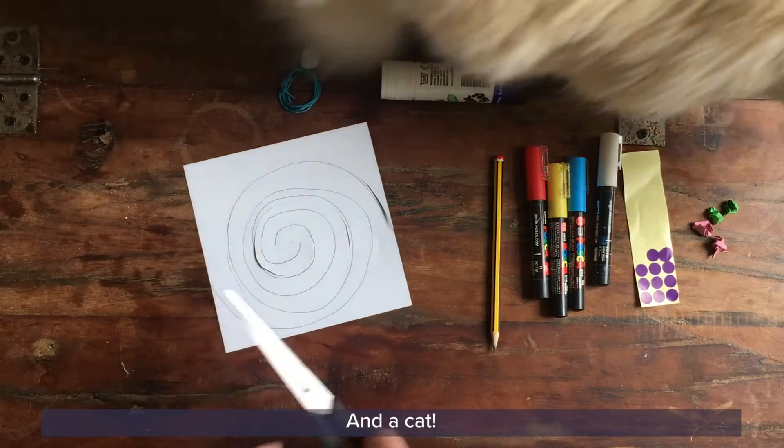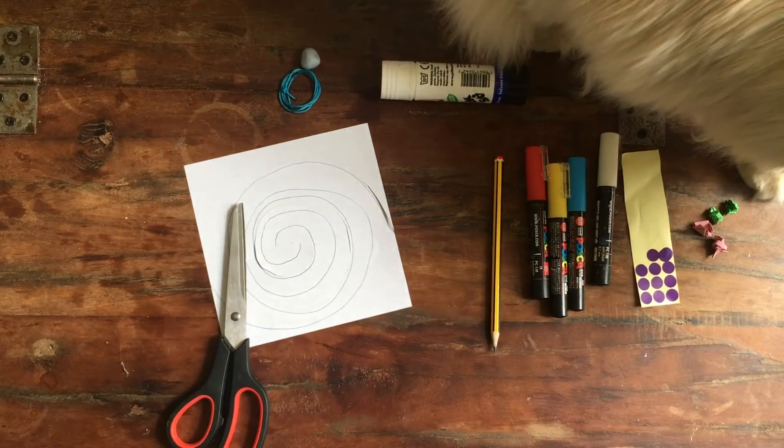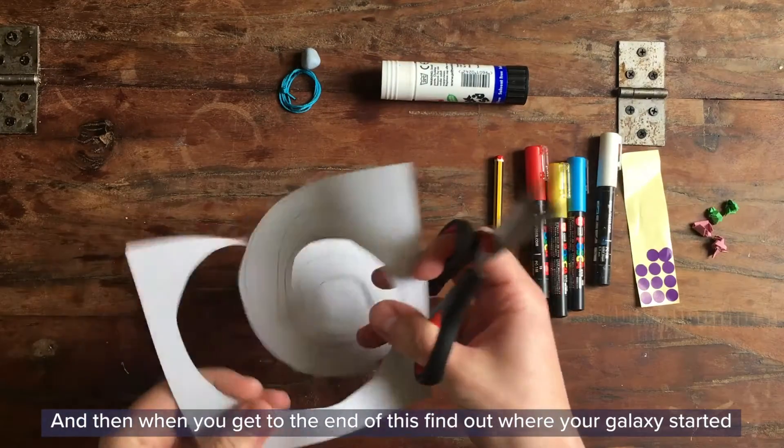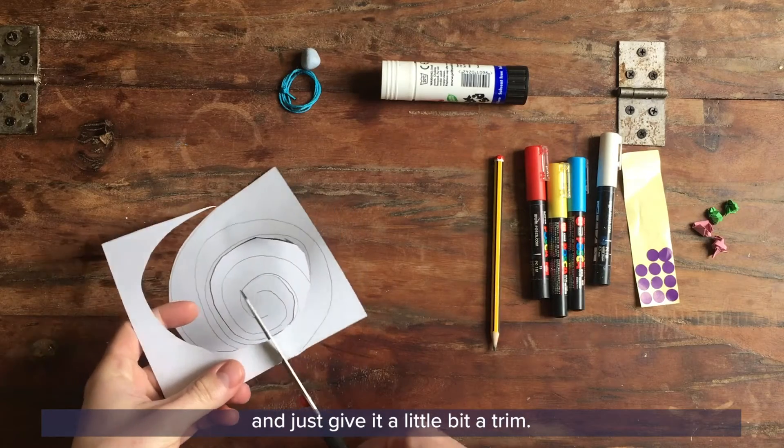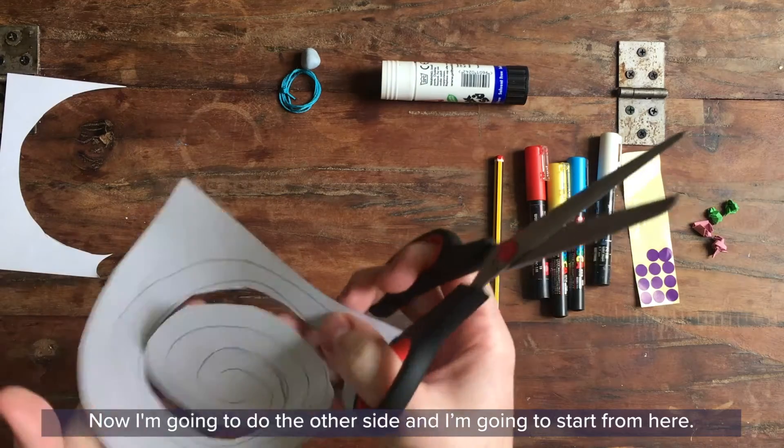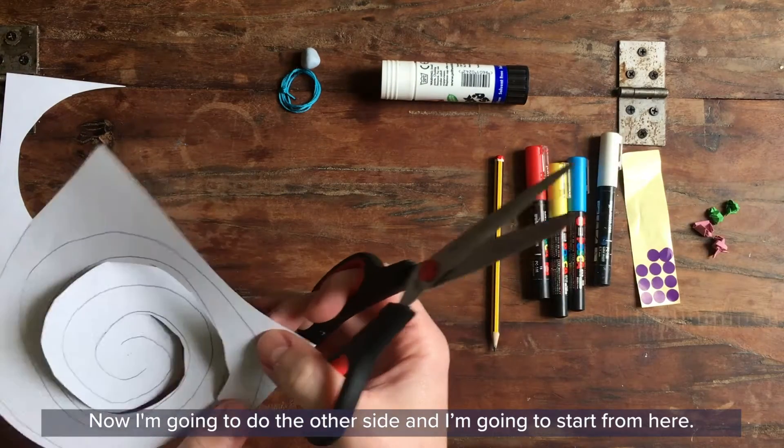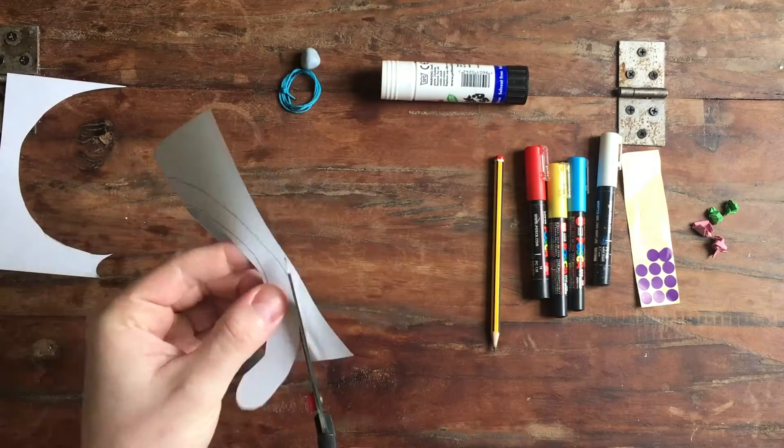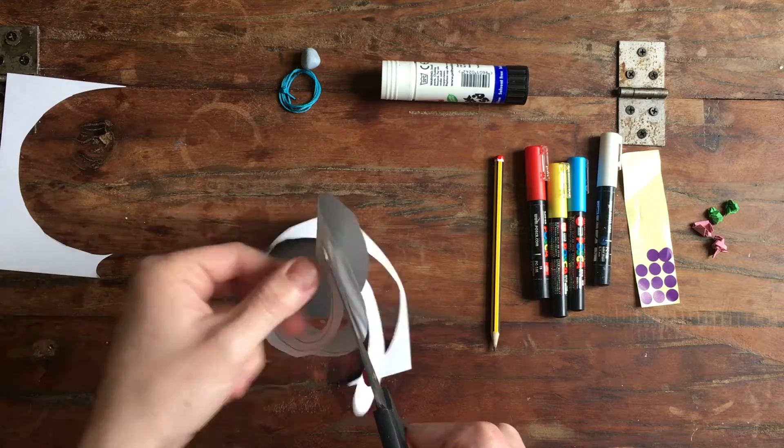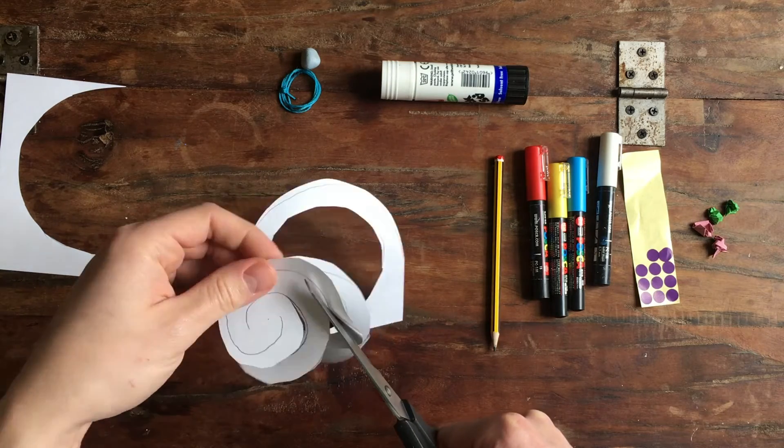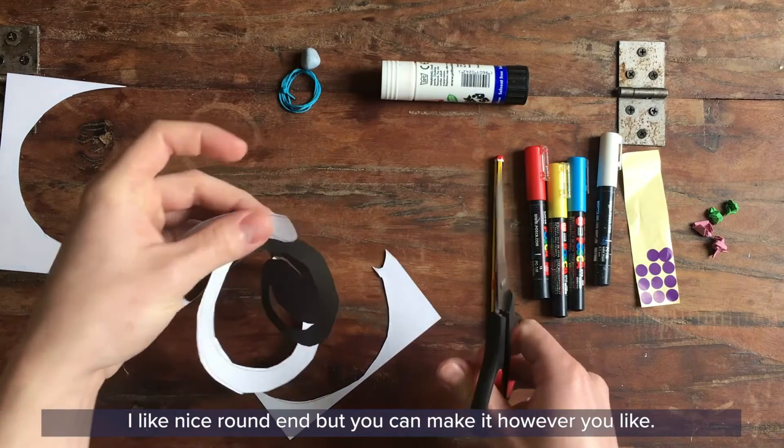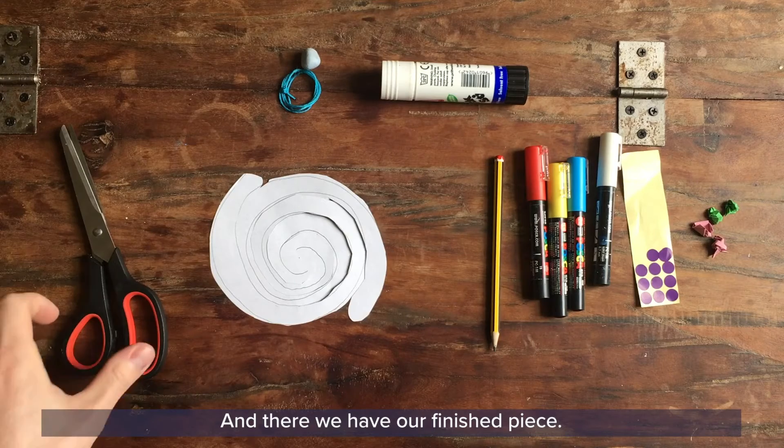That's one side done and a cat. And then when you get to the end of this I'm going to find out where your galaxy started and just give it a little bit of a trim. Great. Now I'm going to do the other side. I'm going to start from here. I like a nice round end but you can make it however you like. And there we have our finished piece.